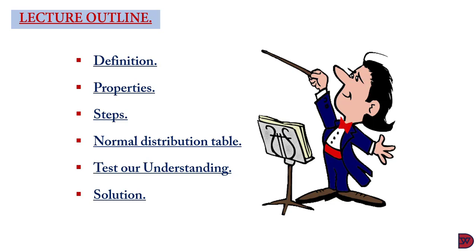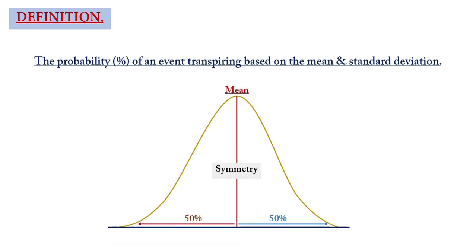Let's get into business. Normal distribution is the probability — that is, the percentage of an occurrence or an event — transpiring between the mean and the standard deviation. If you look at the diagram below, the mean is in the middle and the standard deviation tells how far the event will be from the mean.